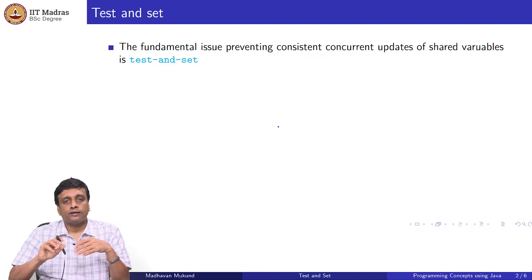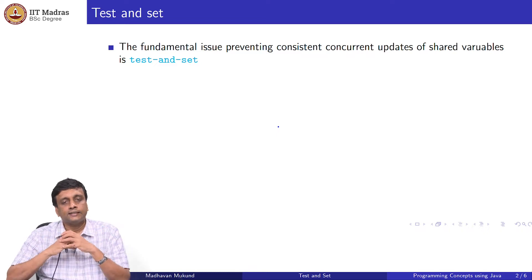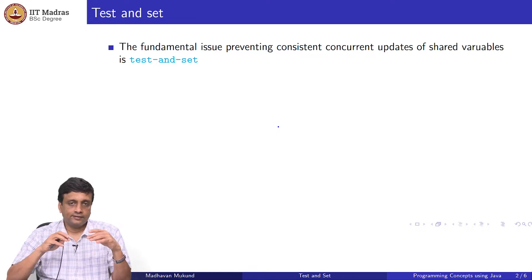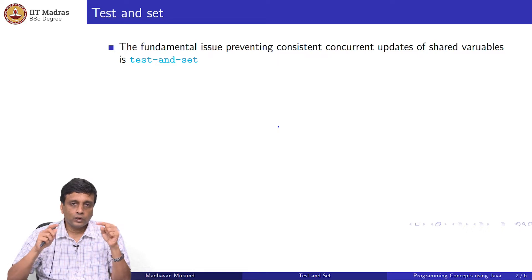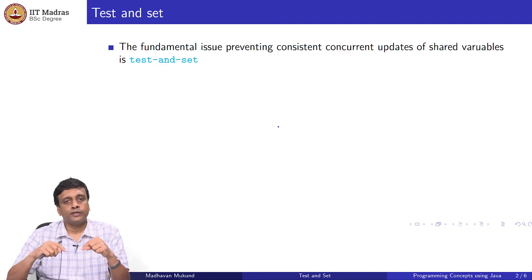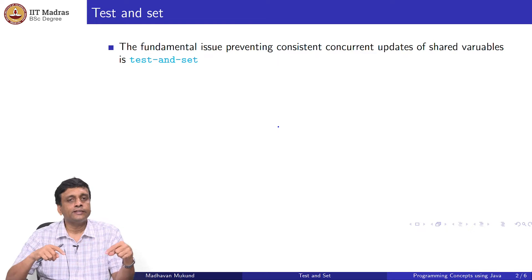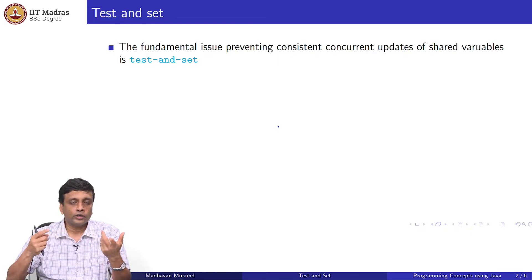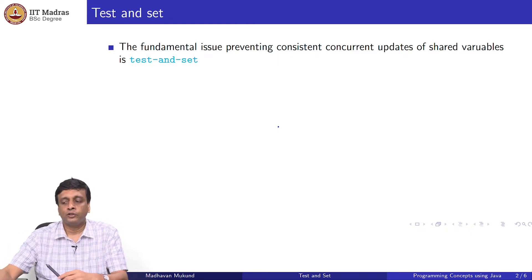The main issue that underlies all these race conditions is something called test and set. We want to look up a variable and depending on what that variable says, we want to do something. Between looking up and doing something, between testing and setting, we cannot guarantee that something does not interfere. The value that we thought we saw may not be the value we are actually working with.